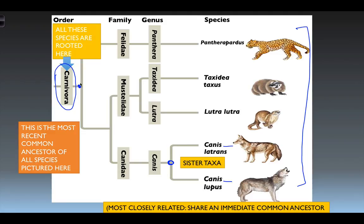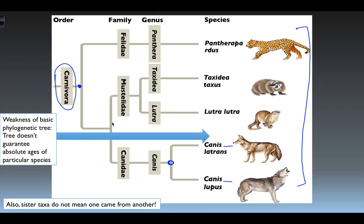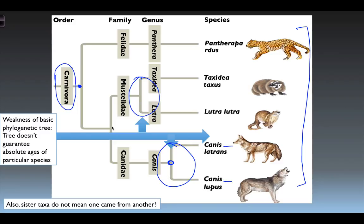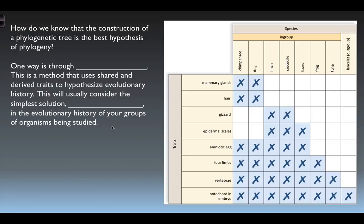Something happened in terms of mutation and speciation that allowed the cat family to go in one direction and the weasel and dog families — Canidae and Mustelidae — in another. One weakness of phylogenetic trees is they don't necessarily guarantee absolute ages of particular species. Without fossil evidence, we can't be sure exactly which divergent point happened first when comparing branches. Absolute ages are not guaranteed especially when going off molecular data alone; the fossil record helps with that.